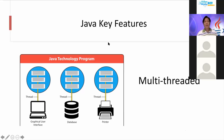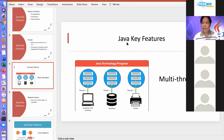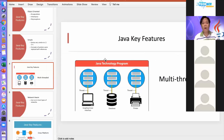Another feature of Java is it's multi-threaded. You might hear the term multitasking, and we also have the term multi-threading. Let me explain the difference. In Windows, when you press Alt+Tab, you're switching from one application to another. On Mac, you press Command+Tab to switch between applications. Multi-threading, on the other hand, is the behavior of an entire application that can process several threads.